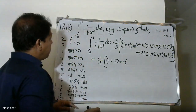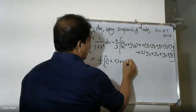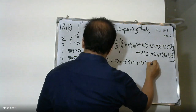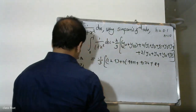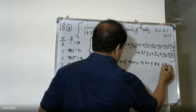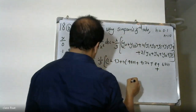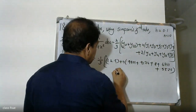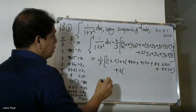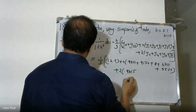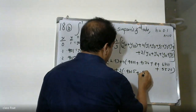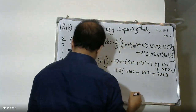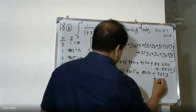Substituting: h/3 = 0.1/3, with y1=0.9901, y3=0.9174, y5=0.8, y7=0.6711, y9=0.5525 for the odd terms, and y2=0.9615, y4=0.8621, y6=0.7353, y8=0.6090 for the even terms.